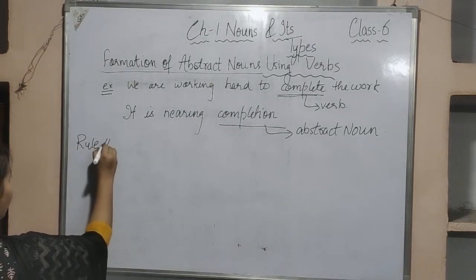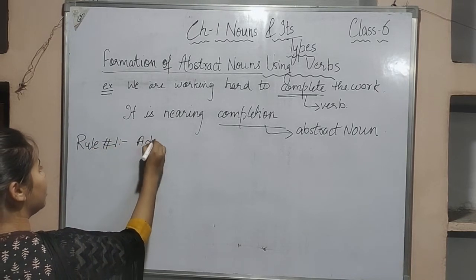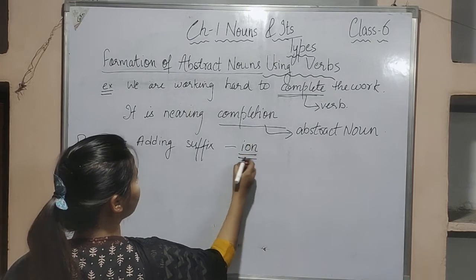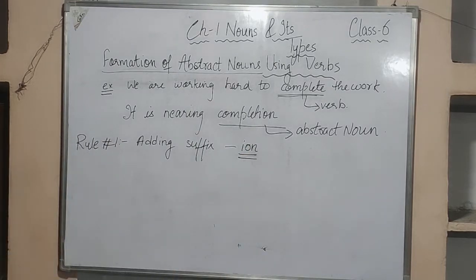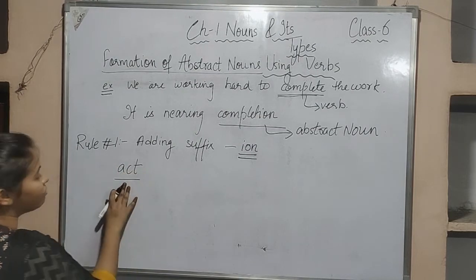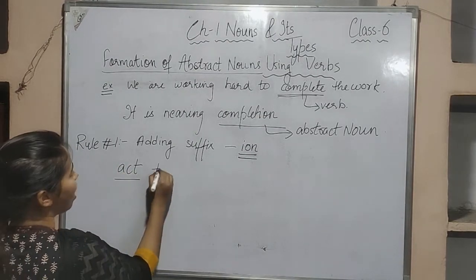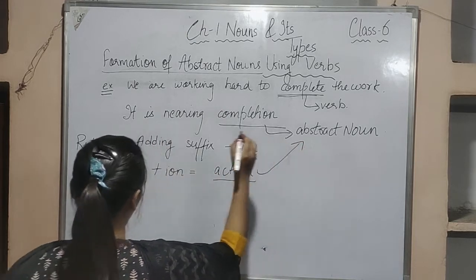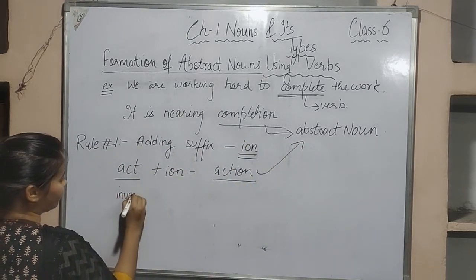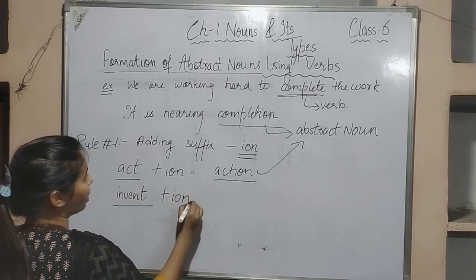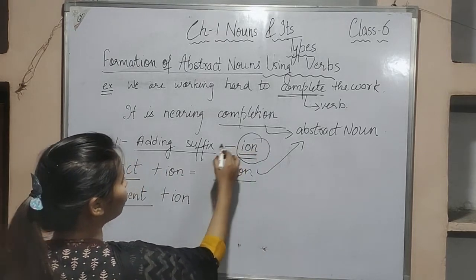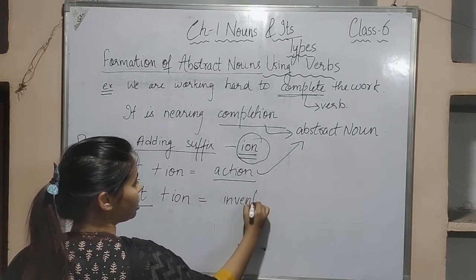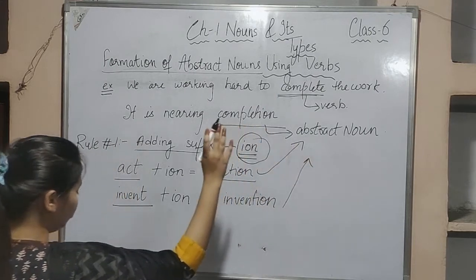Rule number one for forming abstract noun from verbs: add the suffix -ion. For example, the word 'act' is a verb — act + ion = 'action,' which is an abstract noun. Similarly, 'invent' is a verb — invent + ion = 'invention,' which is an abstract noun.